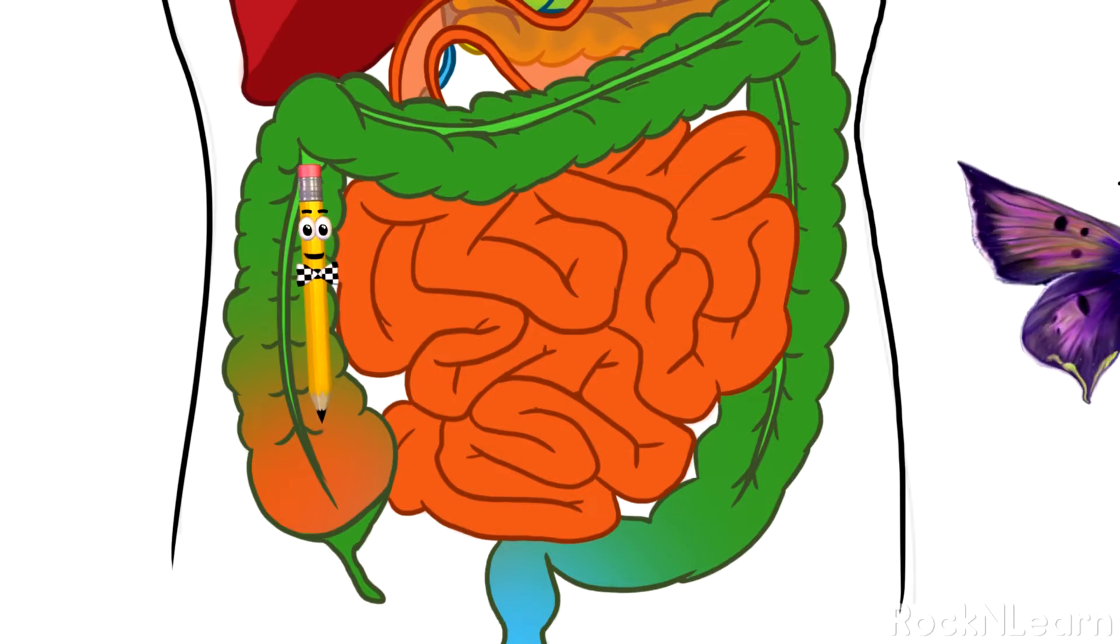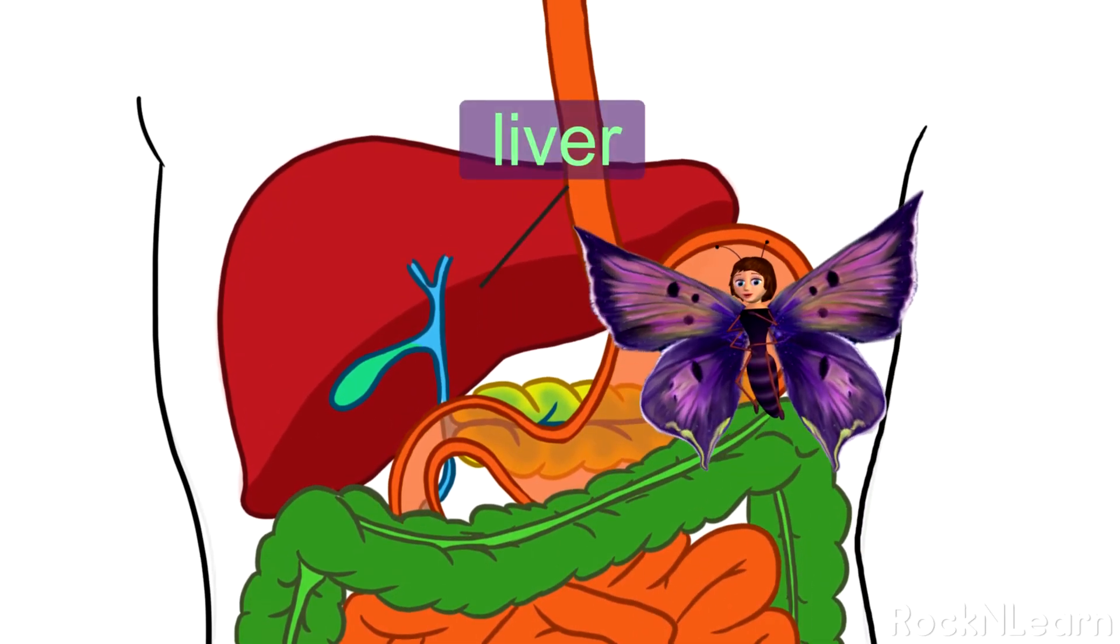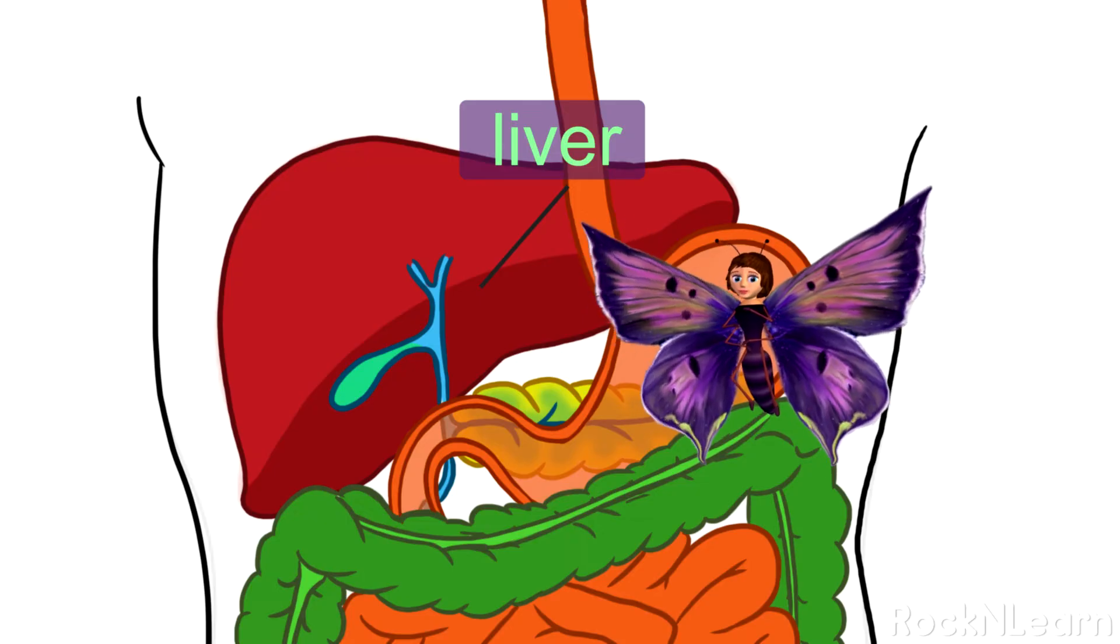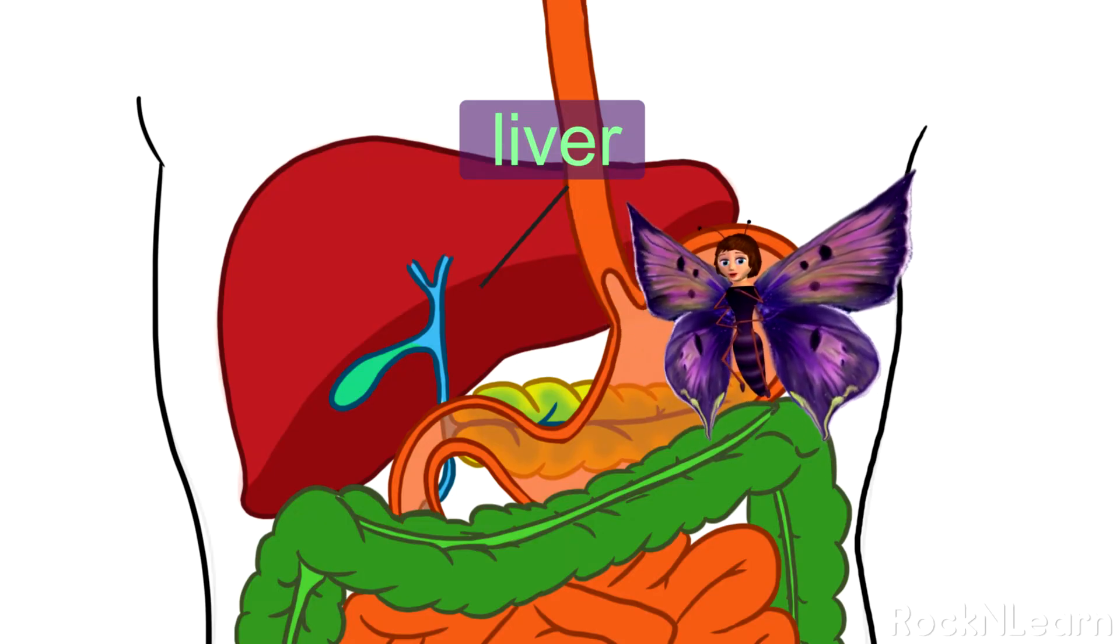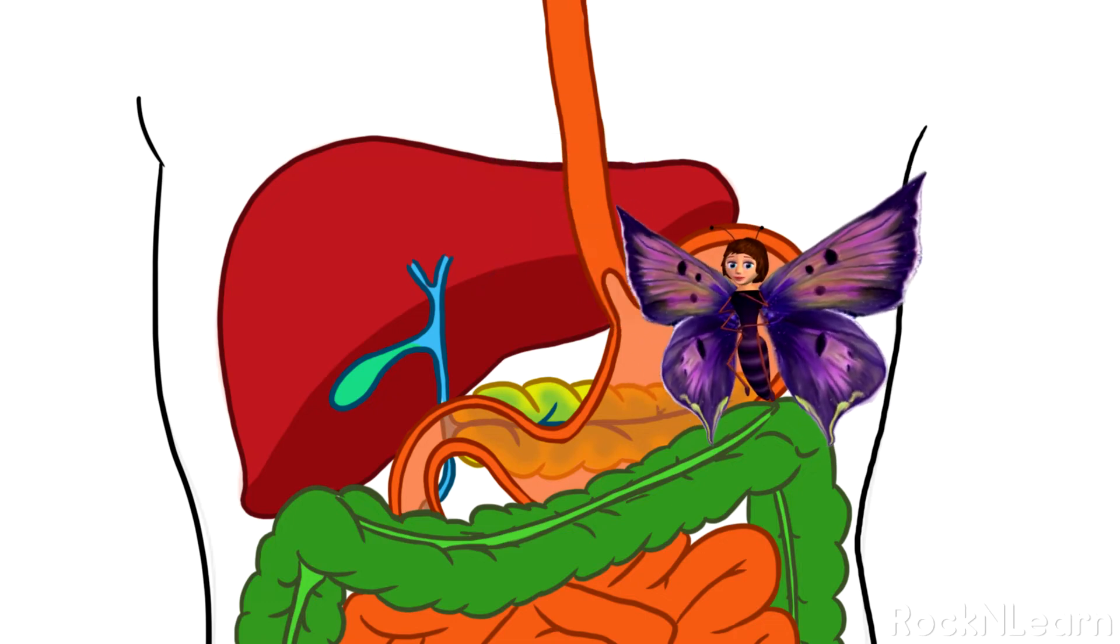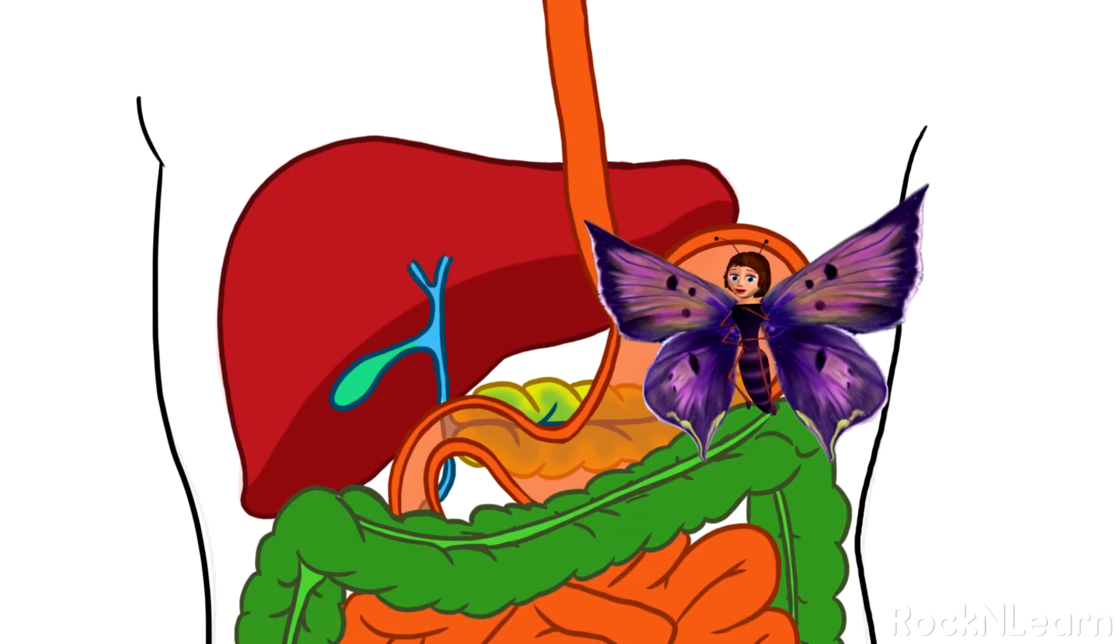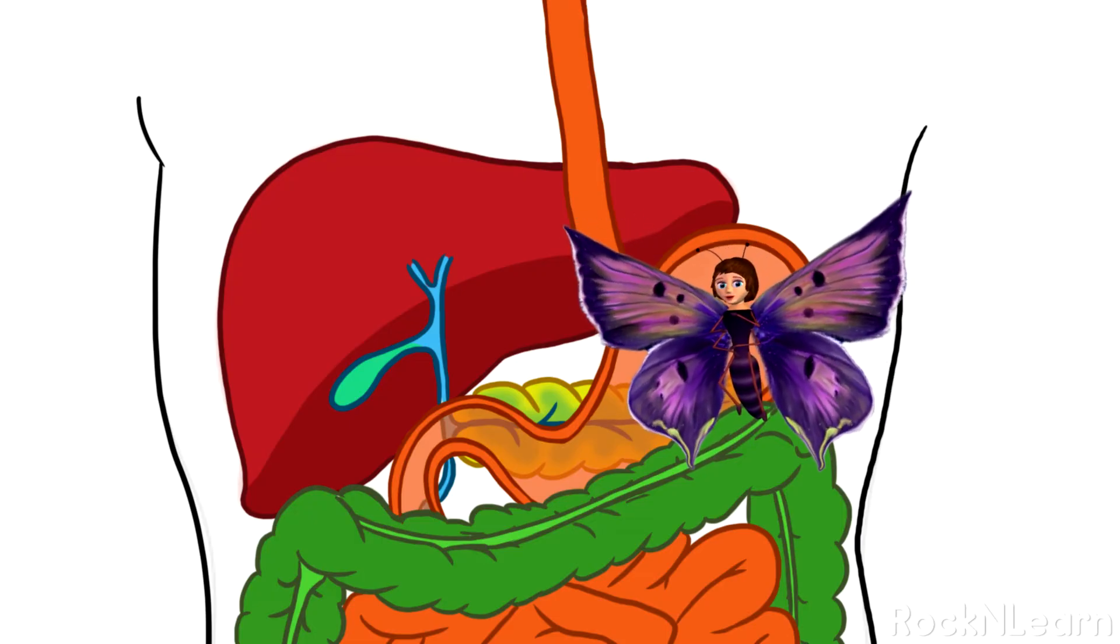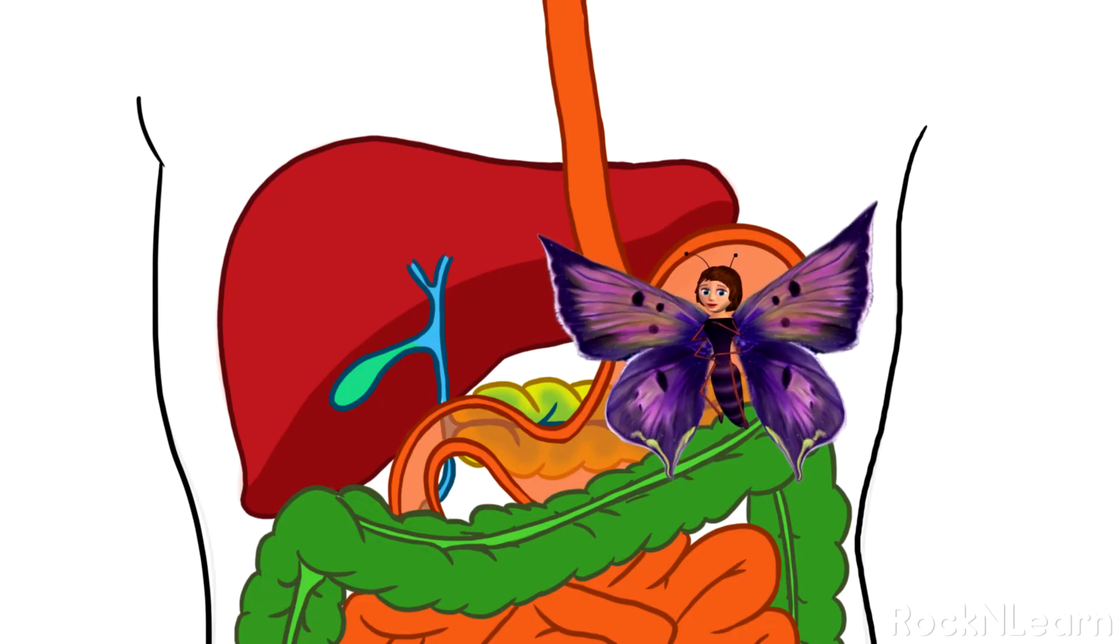The nutrient-rich blood comes directly to the liver for processing. The liver filters out harmful substances or wastes, and turns some of the waste into more bile. The liver even helps figure out how many nutrients will go to the rest of the body, and how many will stay behind in storage. For example, the liver can store certain vitamins and a type of sugar your body uses for energy.